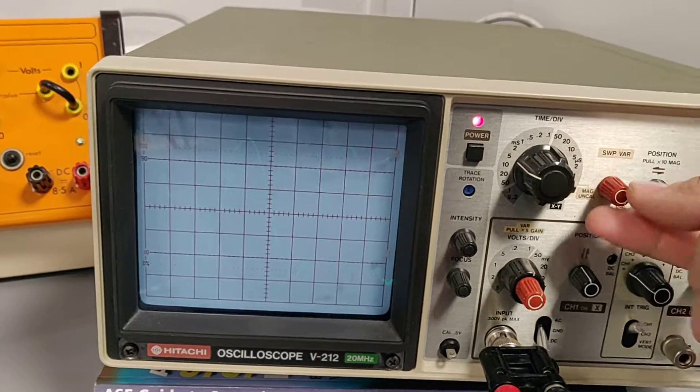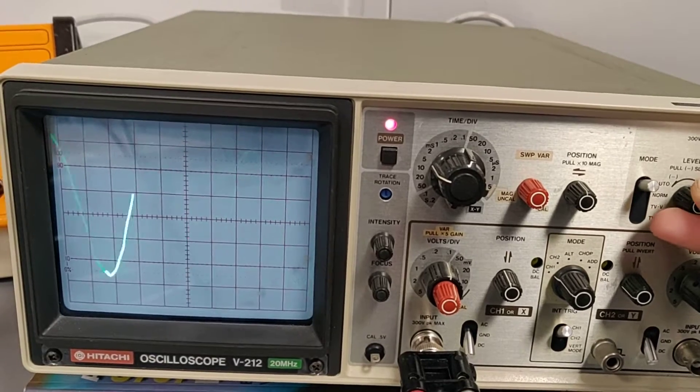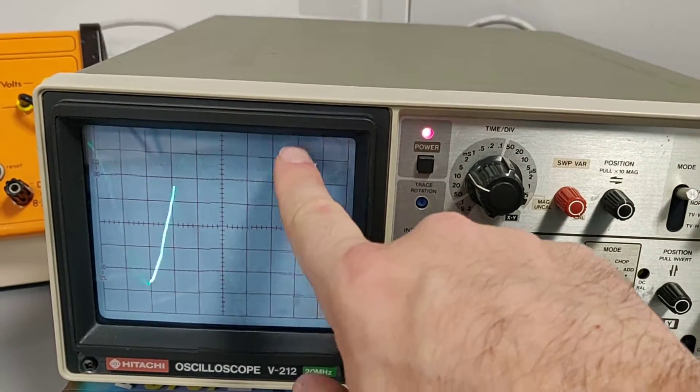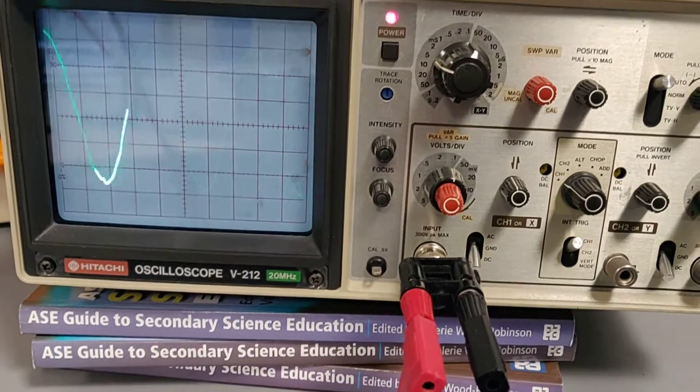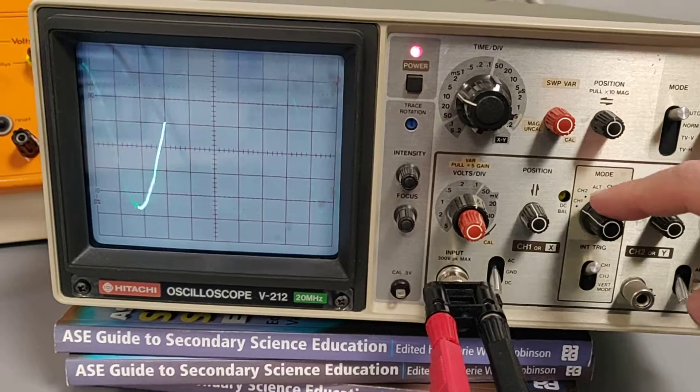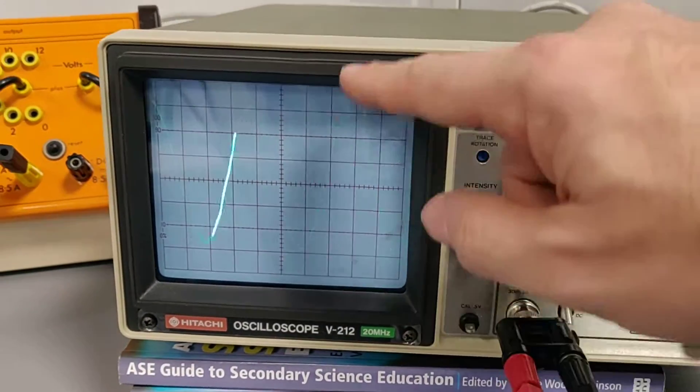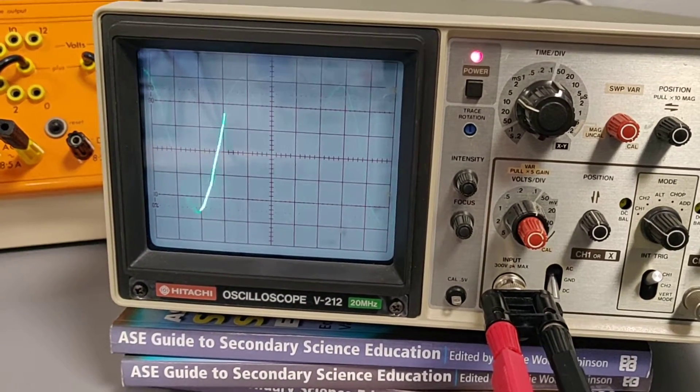which means that each square horizontally is worth 5 milliseconds. My sweep control is set in the calibrate position. And I've adjusted the level control to keep the signal static. You can see the controls as well. It's just on channel 1, and it is actually on the DC setting, not the AC setting. So you see this variable signal. That is the induced EMF we're looking at there in the search coil.